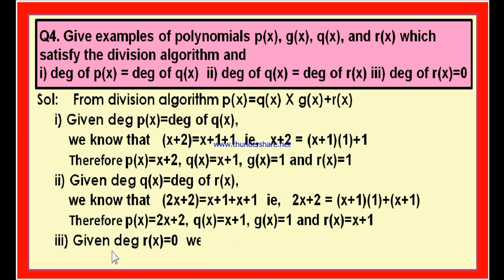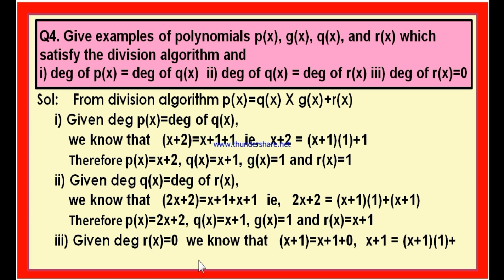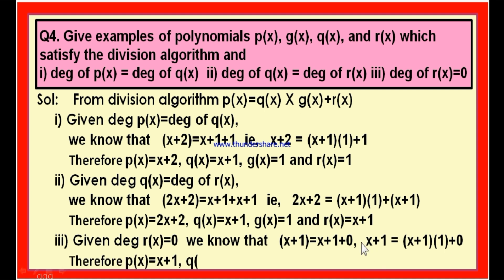For bit 3, the degree of R(x) should equal 0. We can write x + 1 = (x + 1) · 1 + 0, which fits the division algorithm form P(x) = Q(x) · G(x) + R(x). Therefore, P(x) = x + 1, Q(x) = x + 1, G(x) = 1, and R(x) = 0. The remainder is 0, so it is of degree 0, and the required condition is satisfied.